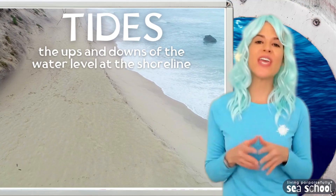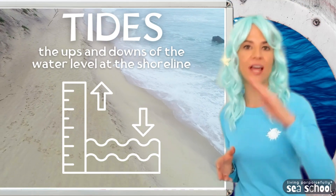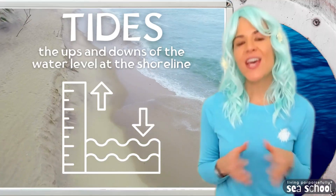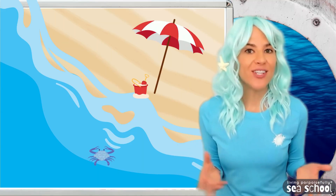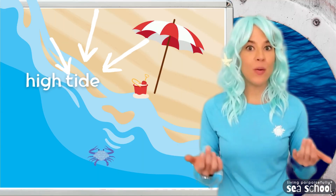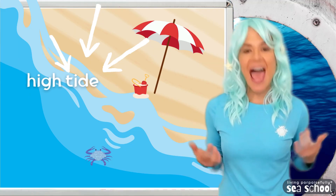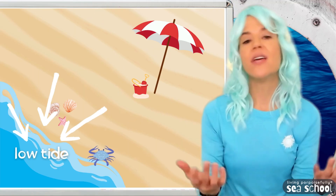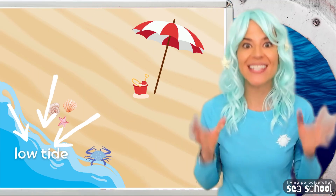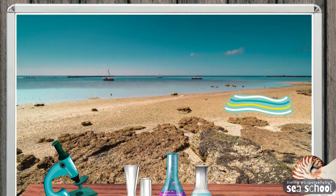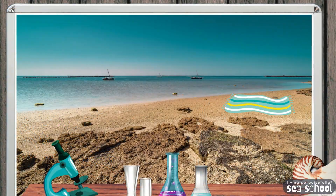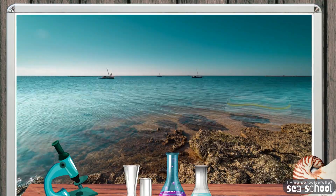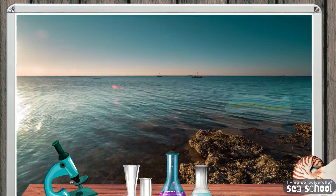Tides are the ups and downs of the water level throughout the day on the shoreline. When you go to the beach, sometimes the water level will be way up the shore, and other times of the day the water level is further back — that's a tide. Some areas have a huge difference between high tide and low tide, so you better not leave your beach towel out or it'll get covered.